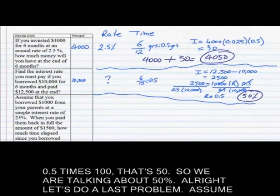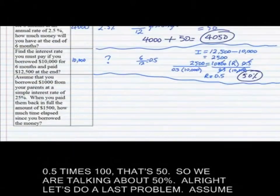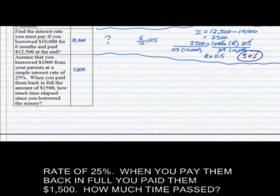Let's do a last problem. Assume that you borrowed $1,000 from your parents. So 1,000 is your principal. At a simple interest rate of 25%. When you pay them back in full, you paid them $1,500. How much time passed? So you don't know T.